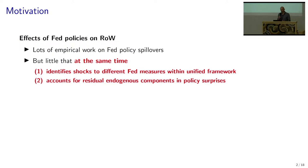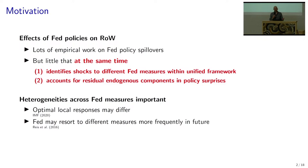The second thing is to account for the possible presence of residual endogenous components in the typical external instruments used in this literature. Under these residual endogenous components, you would subsume things such as a central bank information effect. So very little work does these two things at the same time — looking at different measures in the Fed's toolkit and accounting for things such as central bank information effects.